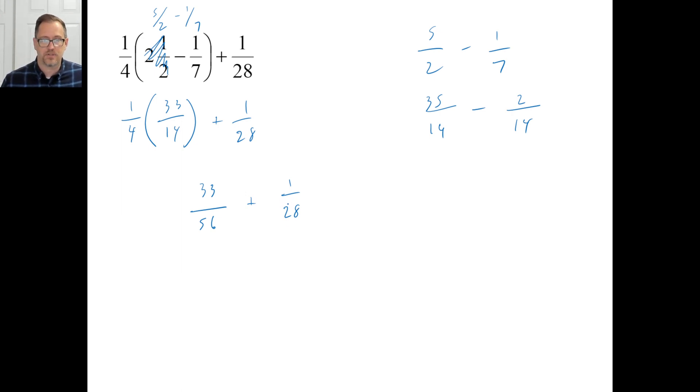A lot of times what Saxon does is make these denominators so that one of them is just a multiple of the other one. And you can probably tell that 28, excuse me, yeah, or 56 is a multiple of 28. It's just 28 times two. So all you need to do to make this into a 56 is just multiply it by two. So multiply by two, then multiply that by two. So look at here. 33 over 56 plus 2 over 56 is 35 over 56. Now, don't you leave that like that.